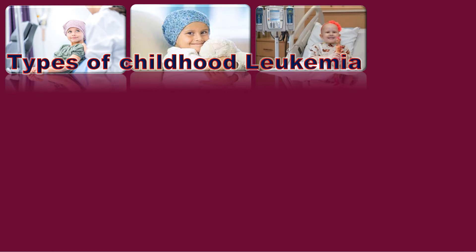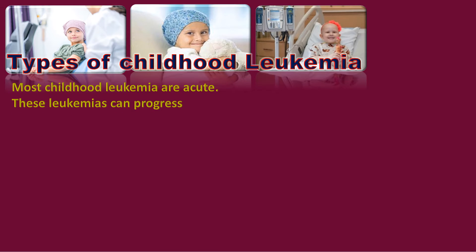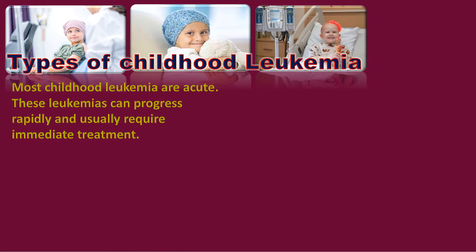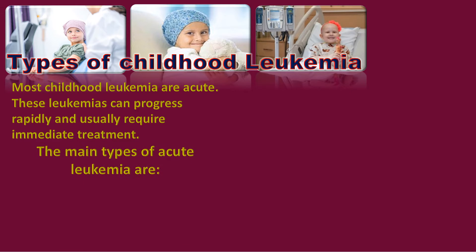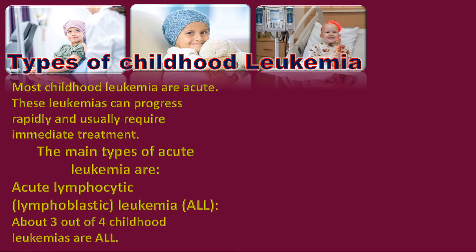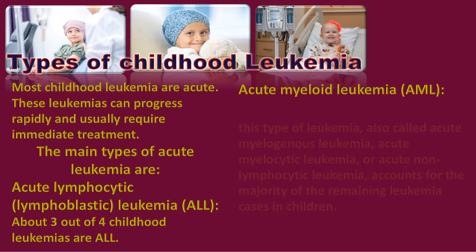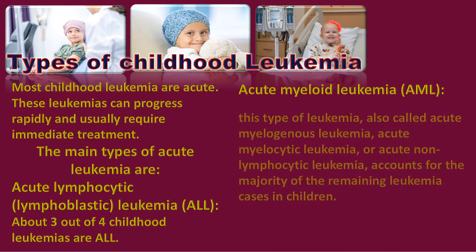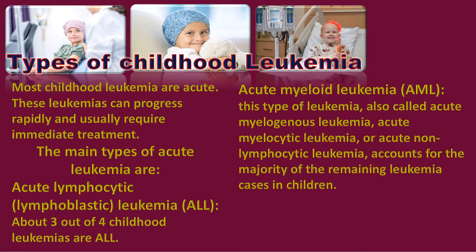Most childhood leukemias are acute and can progress rapidly, usually requiring immediate treatment. The main types are acute lymphocytic leukemia (ALL), which accounts for about three out of four childhood leukemias, and acute myeloid leukemia (AML), also called acute myelogenous leukemia, which accounts for the majority of the remaining leukemia cases in children.